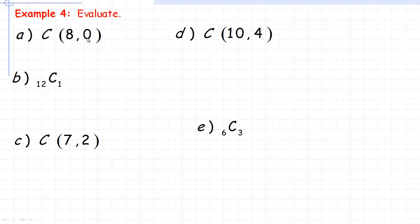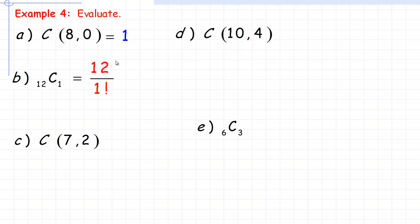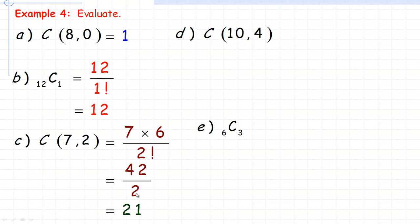8 choose 0 equals 1, because there's only one way to select nothing. In fact, anything choose 0 is always 1. 12 choose 1: the product has just one number — 12 — divided by 1 factorial, which is 1, so the answer is 12. Anything choose 1 always equals that number. For 7 choose 2: 7 × 6 divided by 2 factorial (which is 2), so 42 ÷ 2 = 21.